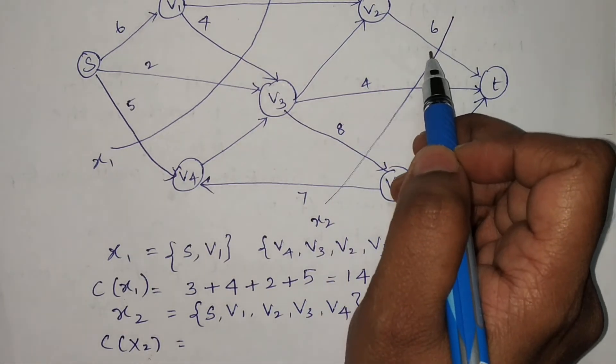If an edge is a backward edge, its value is not included in the computation. So for x2, only three edge values are added: 6 + 4 + 8 = 18. The capacity of cut x2 is 18. In summary, to calculate the capacity of a cut, check each edge on the cut — if it is a forward edge, include its value; if it is a backward edge, exclude it. This concept of forward and backward edges is similar to what we see in the network flow algorithm.